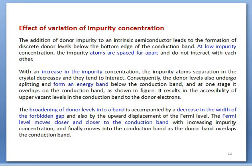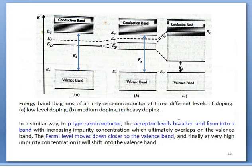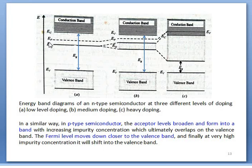Next, we see the effect of impurity concentration on Fermi level. Figure A shows very low donor concentration — around two or three donor atoms — represented by a single donor level Ed, not as a band. The forbidden energy gap equals Ec−Ev. The Fermi level is located between Ec and Ed at very low temperature. When impurity concentration is increased, the single donor level transforms into a band based on the concentration of impurity atoms.